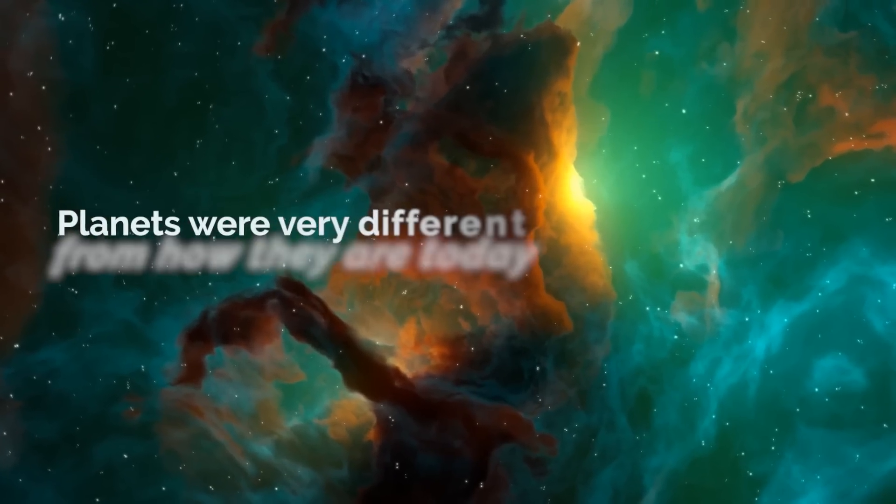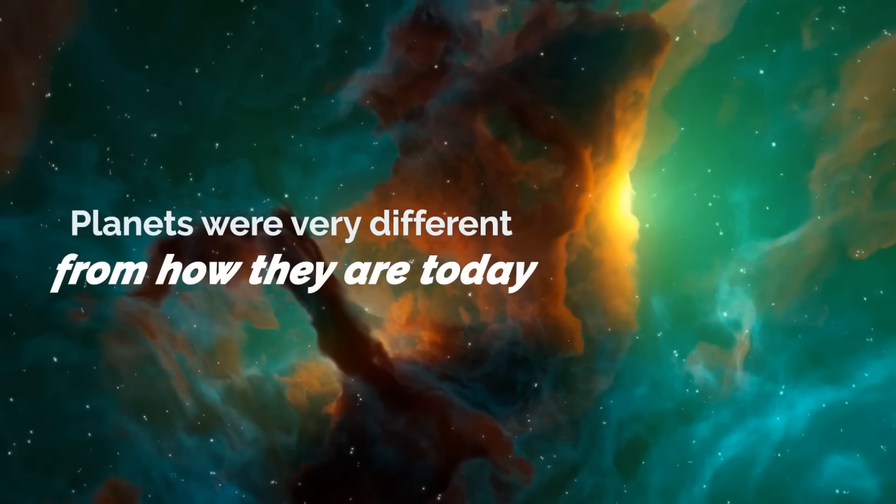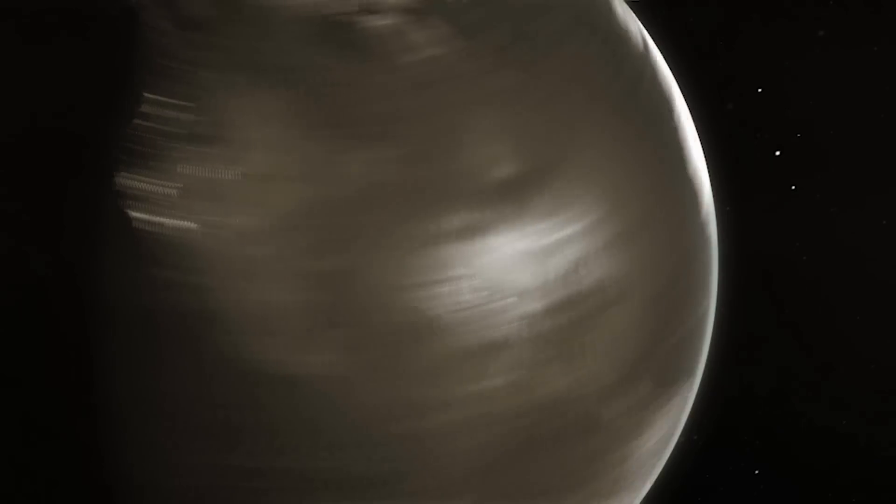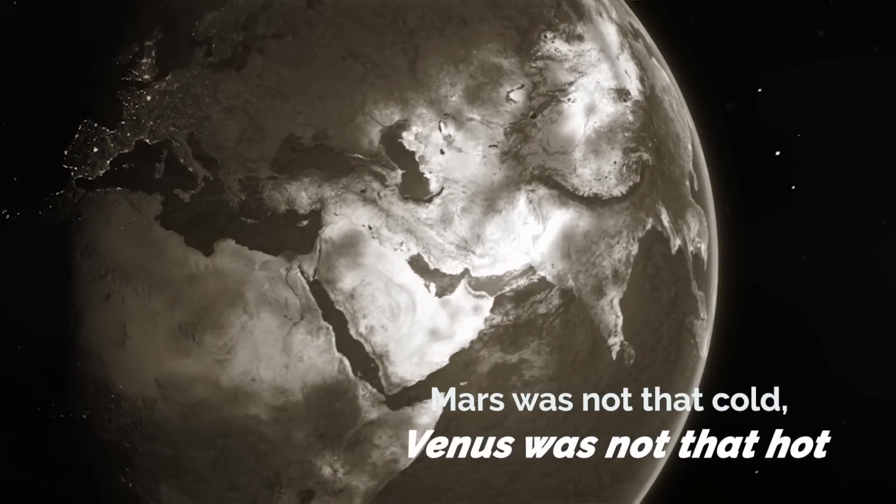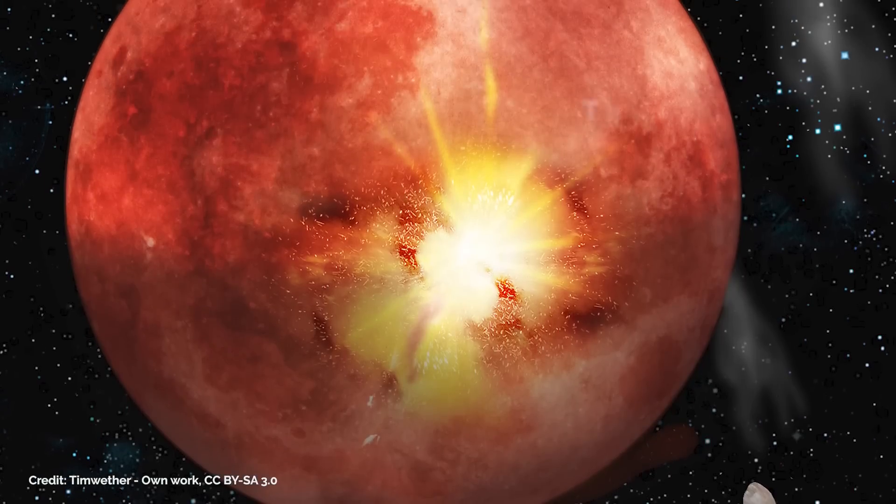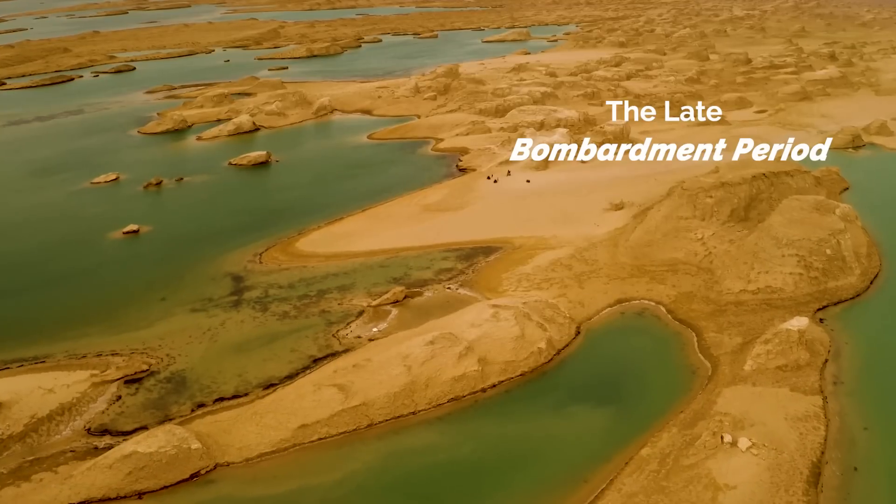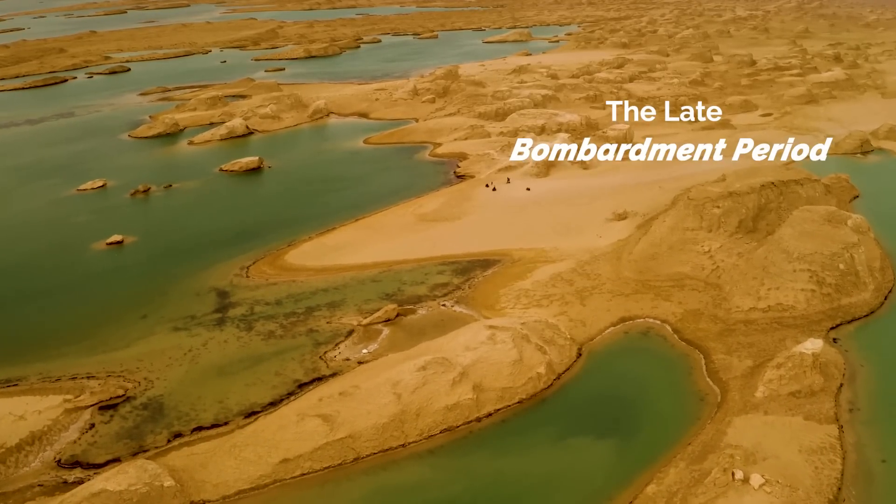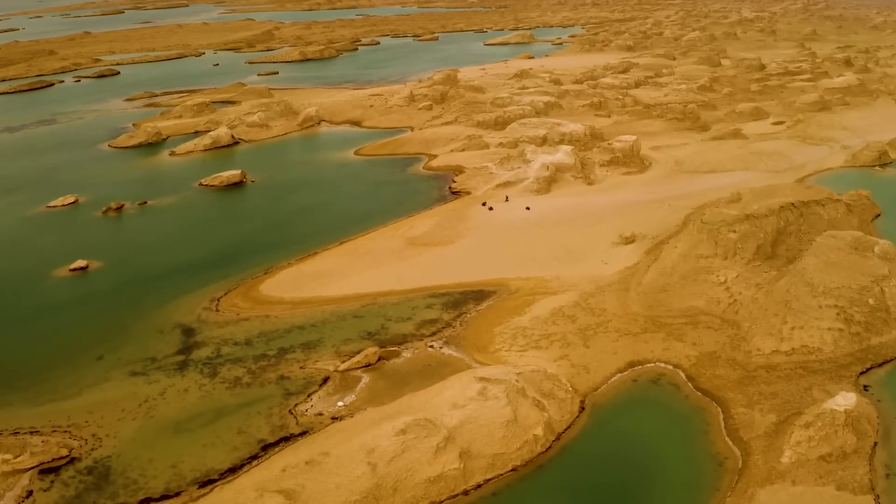Billions of years ago, after the planets finished forming, they were very different from how they are today. Earth was not the paradise we know, Mars was not that cold, and Venus was not that hot. In the case of Venus, it is possible that after it passed the late bombardment period, it maintained stable temperatures and hosted liquid water for billions of years before an event triggered drastic changes in the planet.